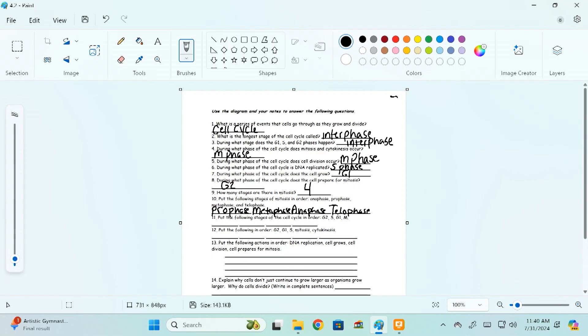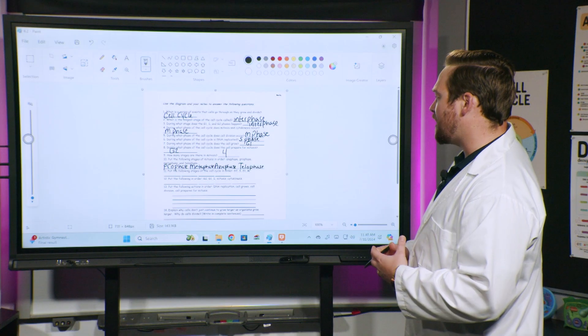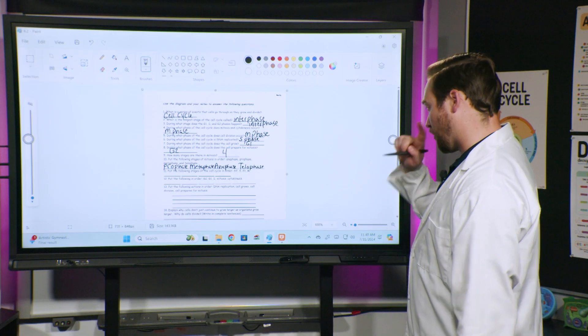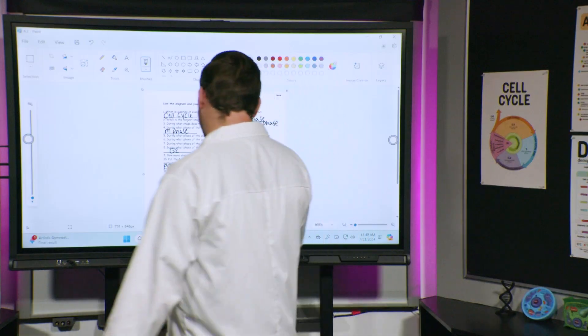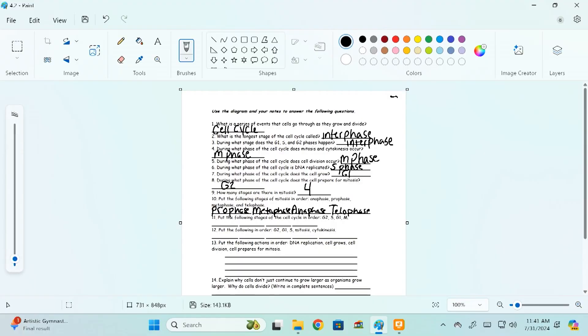Okay, let's go on to the next one. Number 11, put the following stages of the cell cycle in the correct order. Okay, so again, let's think back to that coloring sheet that we did. The four stages of the cell cycle, it goes G1, S, G2, and then the M phase is for mitosis and the cytokinesis. Great job.